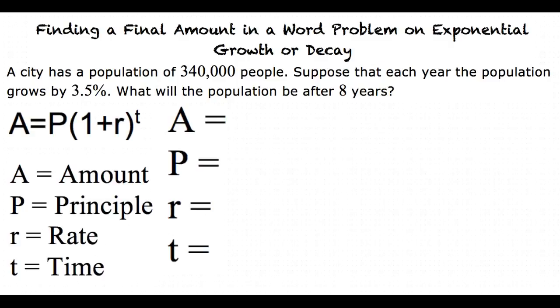To start out, let's write out all the values we know. We know that P is equal to 340,000 people for our starting amount. We can see that the population grows by a rate of positive 0.035 and the time we are looking at is t is equal to 8 years.